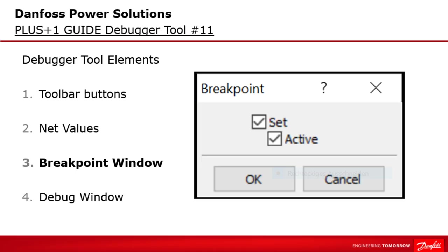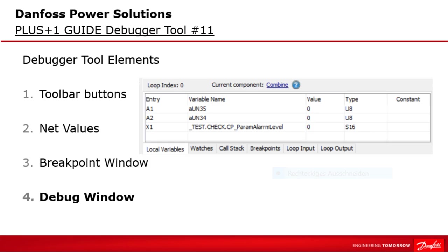Third, the breakpoint window. This window is used to query a component at an insertion point and create a breakpoint that interrupts the execution of the debugger toolbar buttons. And for the debug window — during debugger mode, Guide provides a debug window with six debugger panes to view current local variables, manage breakpoints, set watchpoints, and enter individual signal values to be set on loops. We will take a deeper look at each of these debugger tool elements step by step.